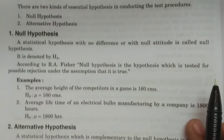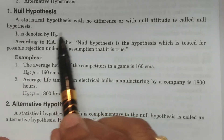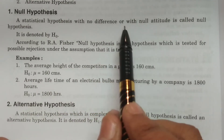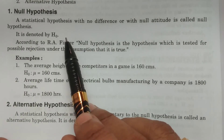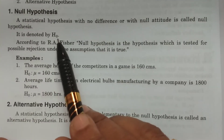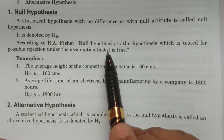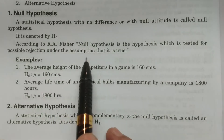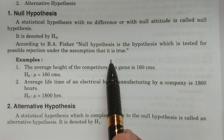First, the null hypothesis. A null hypothesis is a statistical hypothesis with no difference, or with null attitude. It is denoted by H₀. According to Fisher, the null hypothesis is the hypothesis which is tested for possible rejection under the assumption that it is true.